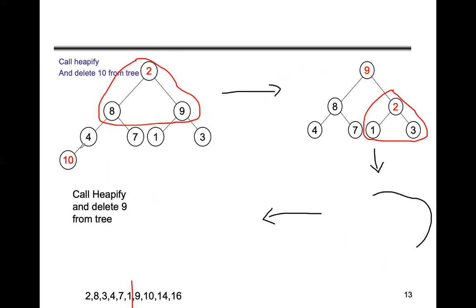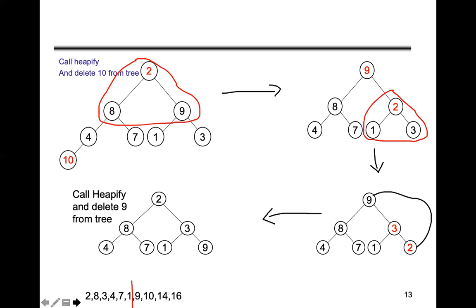After satisfying the heap property, we exchange 9 with the last element, delete 9 from the tree, and continue. The sorted array now contains 9, 10, 14, 16. The remaining elements to be sorted are 2, 8, 3, 4, 7, 1. The process continues: 8 and 2 are exchanged via heapify, then 7 moves up, then 8 and 1 are exchanged — placing 8 in its final sorted position. Sorted array now: 8, 9, 10, 14, 16.